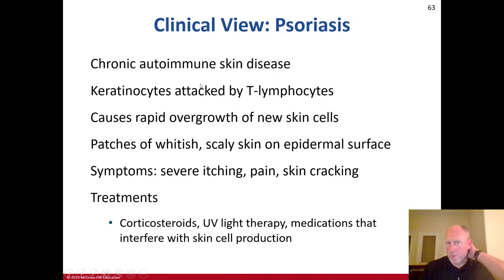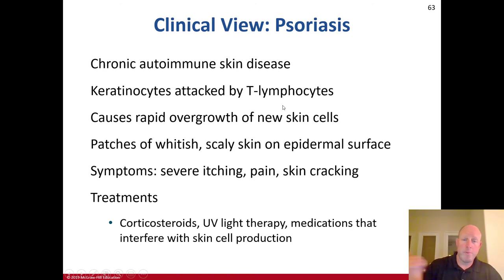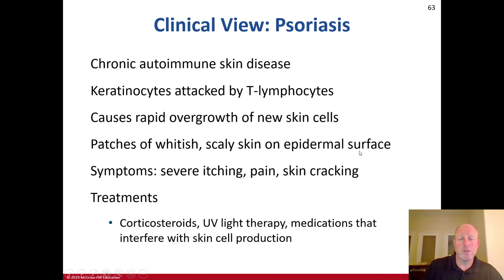With psoriasis, it's a chronic autoimmune skin disease. Keratinocytes are attacked by T lymphocytes of the immune system — the body is fighting its own cells. It causes rapid overgrowth of new skin cells, and patches of whitish, scaly skin on the epidermal surface, sometimes including severe itching, pain, and skin cracking. Treatments include corticosteroids, UV light (ultraviolet light therapy), and medications that interfere with skin cell production.